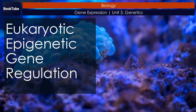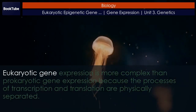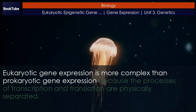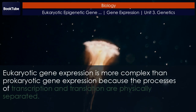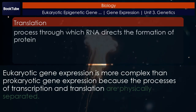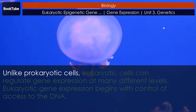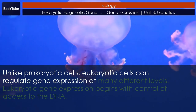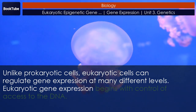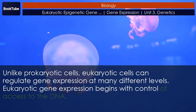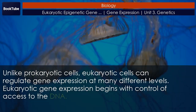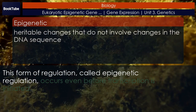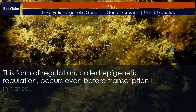Eukaryotic gene expression is more complex than prokaryotic gene expression because the processes of transcription and translation are physically separated. Unlike prokaryotic cells, eukaryotic cells can regulate gene expression at many different levels. Eukaryotic gene expression begins with control of access to the DNA. This form of regulation, called epigenetic regulation, occurs even before transcription is initiated.